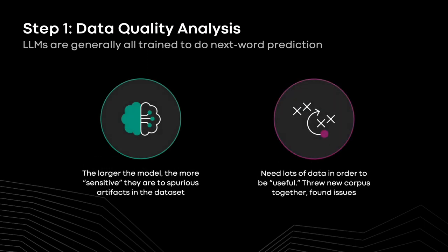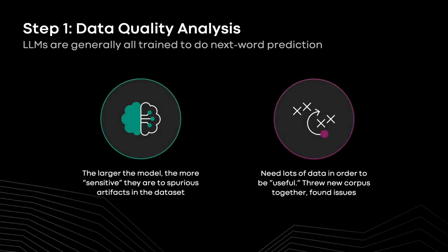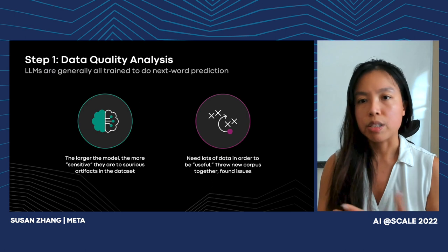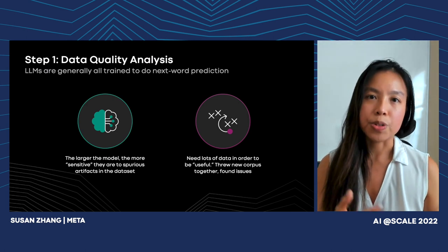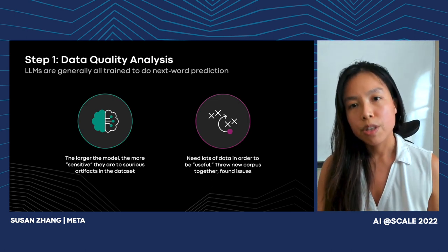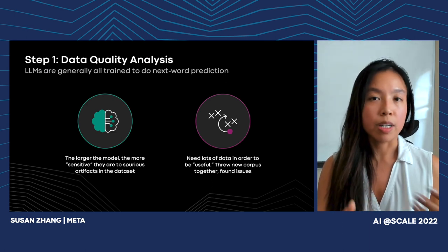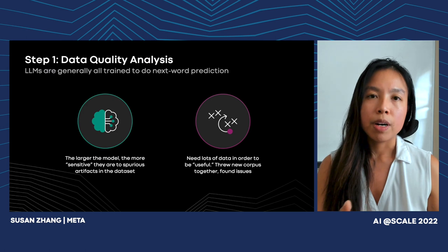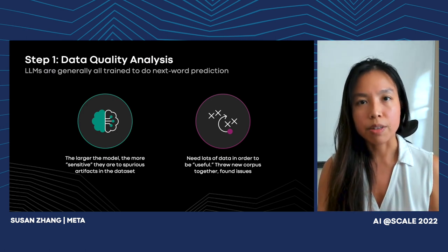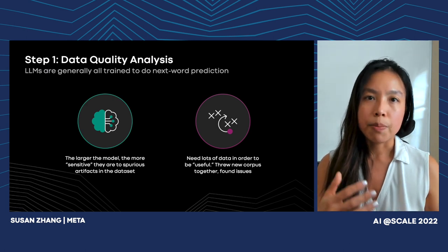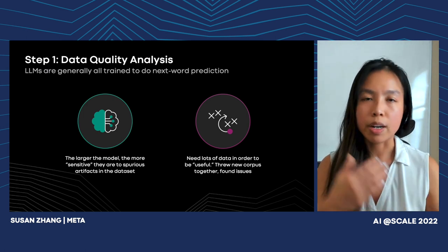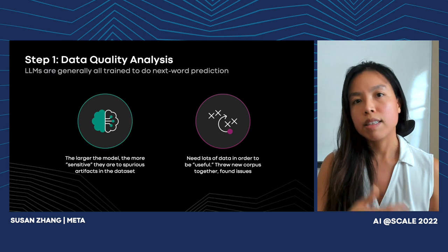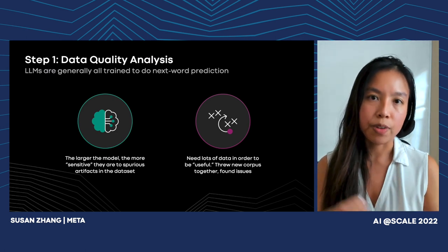After settling on the architecture, the next thing is to figure out what data to train on. These large language models are generally trained to do next-word prediction, which depends entirely on the corpus you feed the model. The larger the model, the more fluent it becomes, but the flip side is that models also become very sensitive to artifacts in the dataset. Things that may not show up at smaller scale get amplified at larger scale, especially formatting issues or repetitive text — these models will overfit to these tiny details.